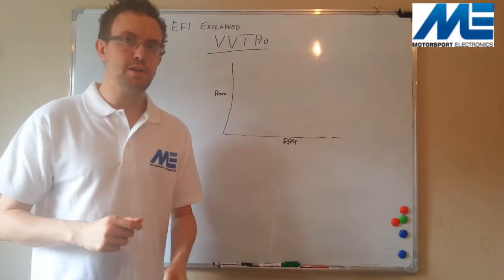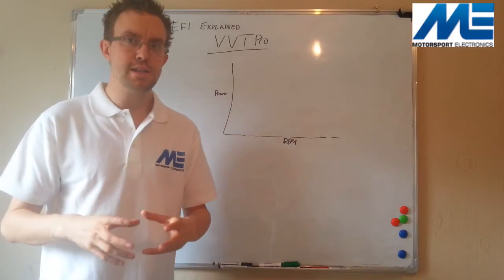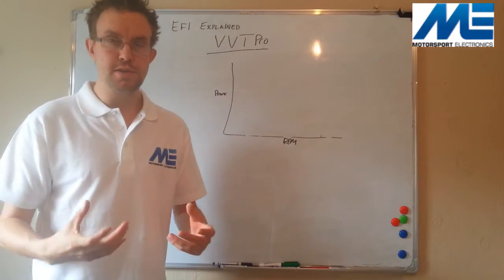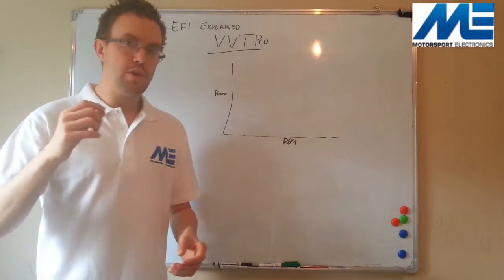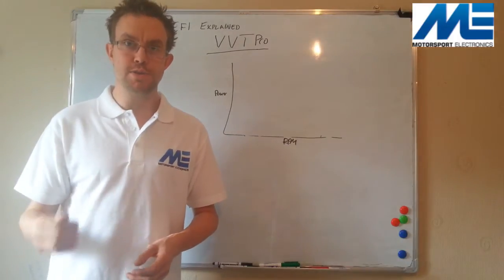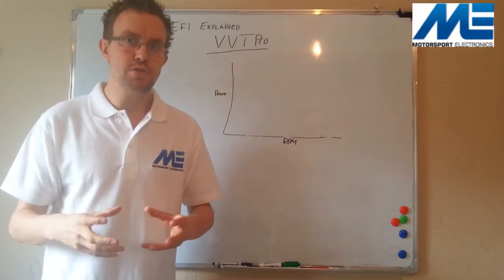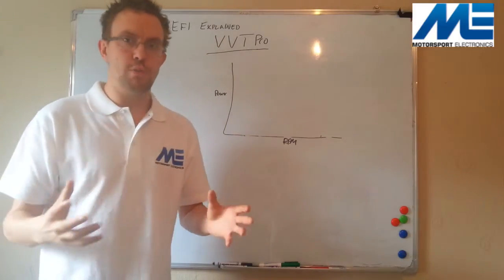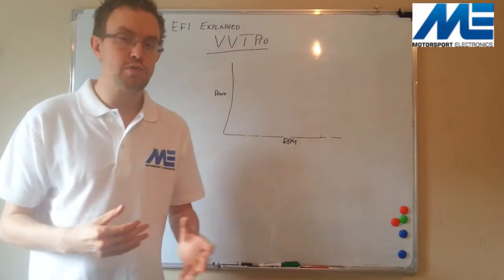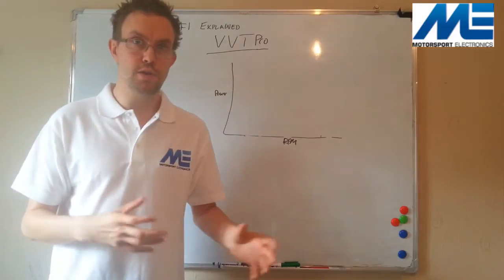So, once we'd finished writing the software to accurately target the cam position, before going on to the mapping side of things, what we did was we simulated locking the cam at different angles, and we actually put all these graphs online on our website, and they're linked down below. What we tried to do is emulate what the typical user would do. So, you've got three options when using an ST170 before the VVT Pro came along.